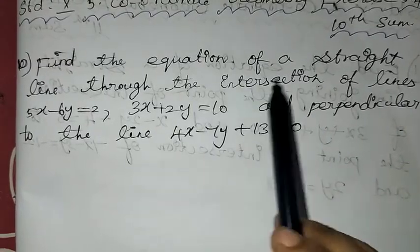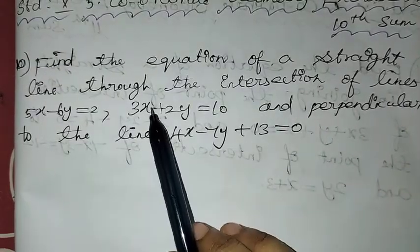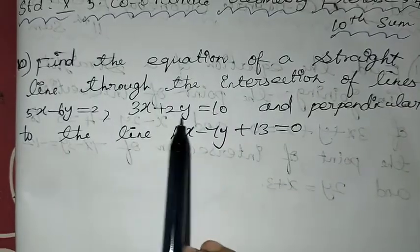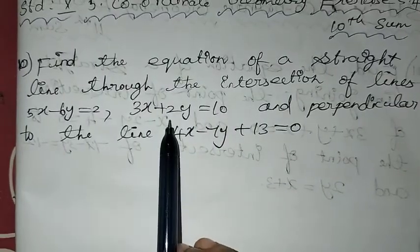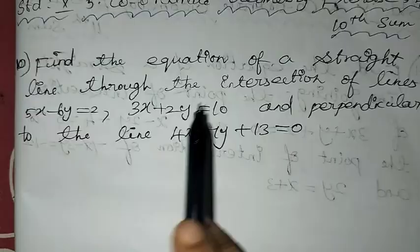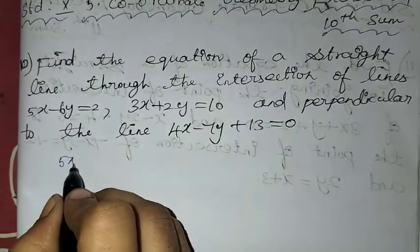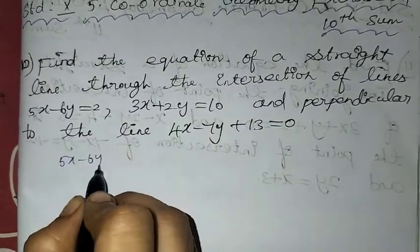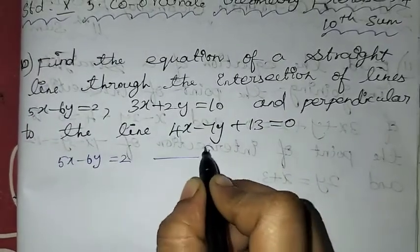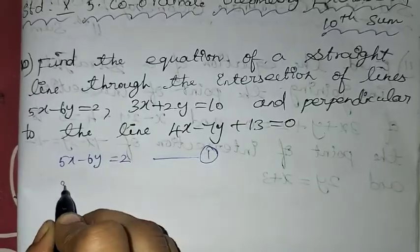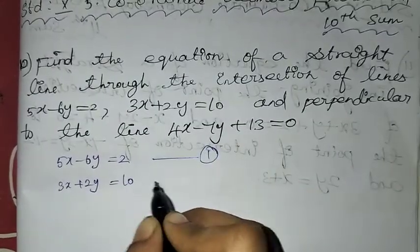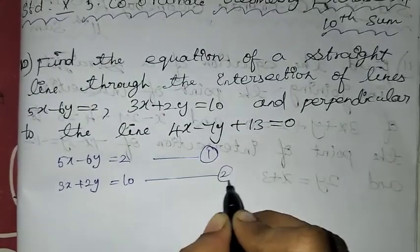We need to find the equation of a straight line through the intersection of these two lines. First, we find the intersecting point. That is why we solve the two equations: 5x minus 6y equal to 2 as equation 1, and 3x plus 2y equal to 10 as equation 2.